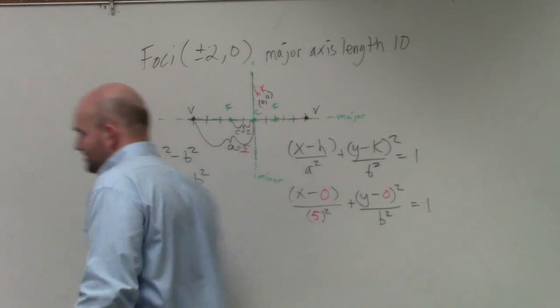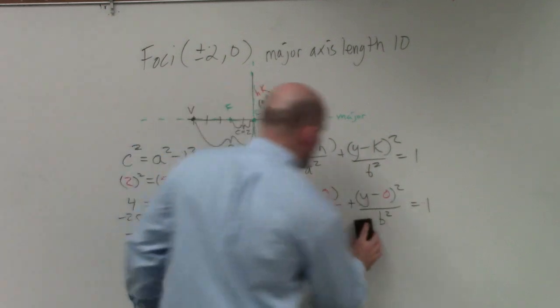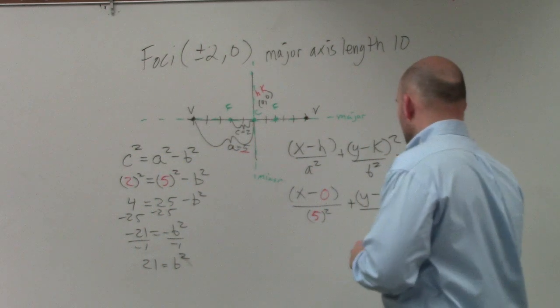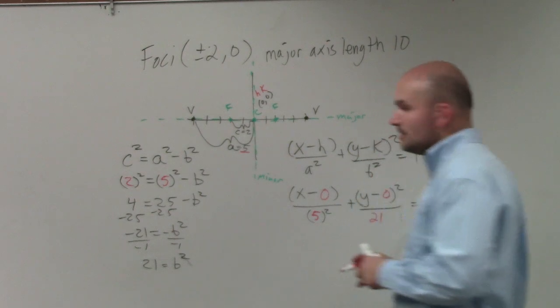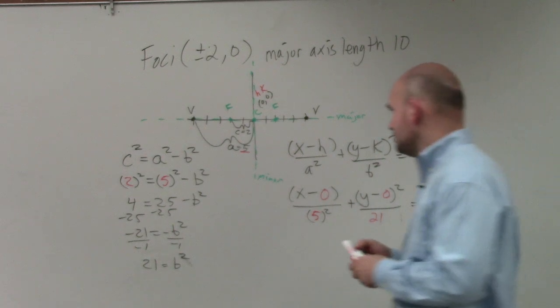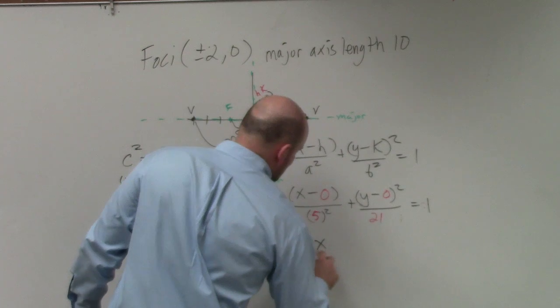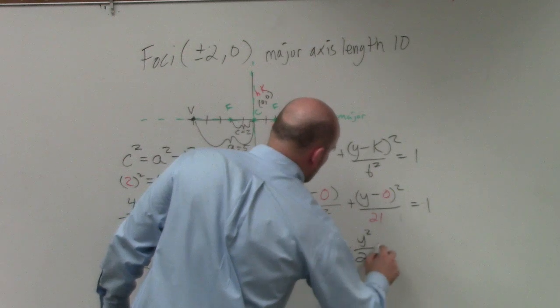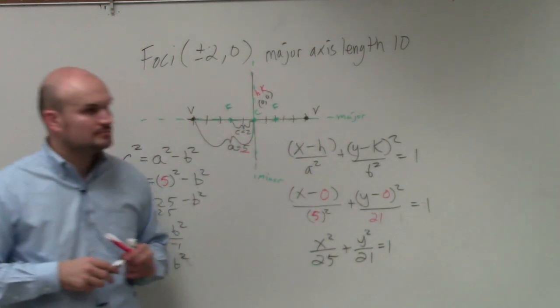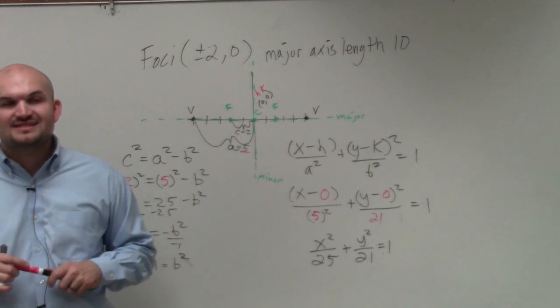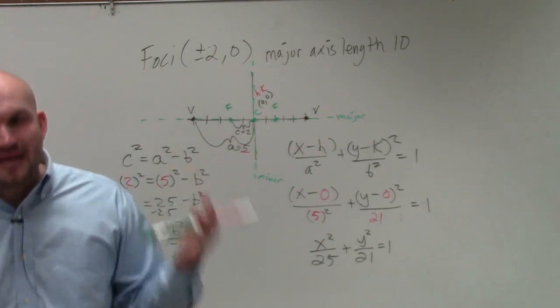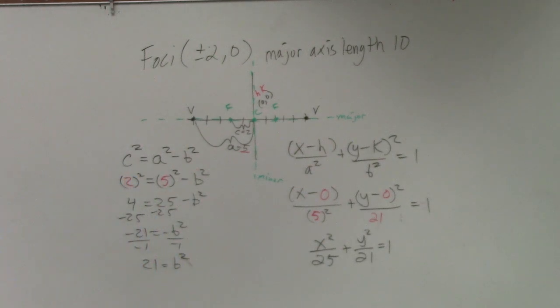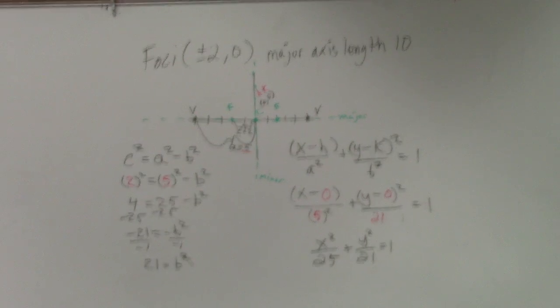So I'm going to erase this, erase this, write in 21, and then I can just simplify my equation now. So now my final answer is x squared over 25 plus y squared over 21 equals 1. OK? It's a systematic approach, though, guys. If you plot the information, find all the information you can figure out from there, then you have to make the next major decision.